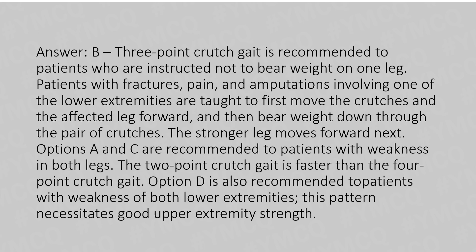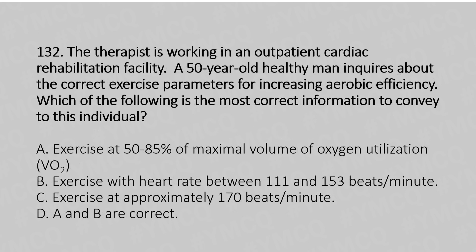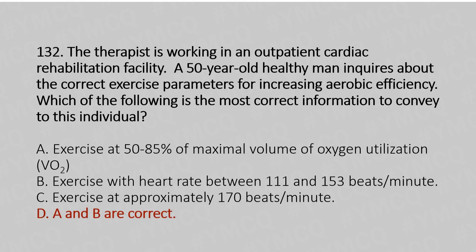Now let's move to Question 132. The therapist is working in an outpatient cardiac rehabilitation facility. A 50-year-old healthy man inquires about the current expected parameters for increasing aerobic efficiency. Which of the following is the most correct information to convey? Option A: Exercise at 50-85% of maximum volume of oxygen utilization. Option B: Exercise with heart rate between 111 and 153 beats per minute. Option C: Exercise at approximately 170 beats per minute. Option D: A and B are correct. And the answer is Option D, A and B are correct.